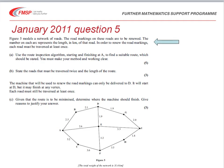I'll now illustrate those points by looking at an exam question. We should always read through the question to familiarize ourselves with the context. We've got figure five, which is a network of roads, or models a network of roads. The road markings on these roads are to be renewed. The number on each arc represents the length in kilometers of that road. In order to renew the road markings, each road must be traversed at least once.